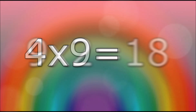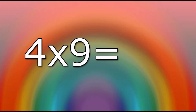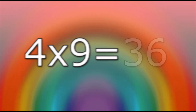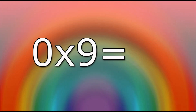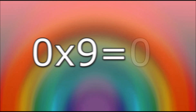4 times 9 equals... 36. 0 times 9 equals... 0.